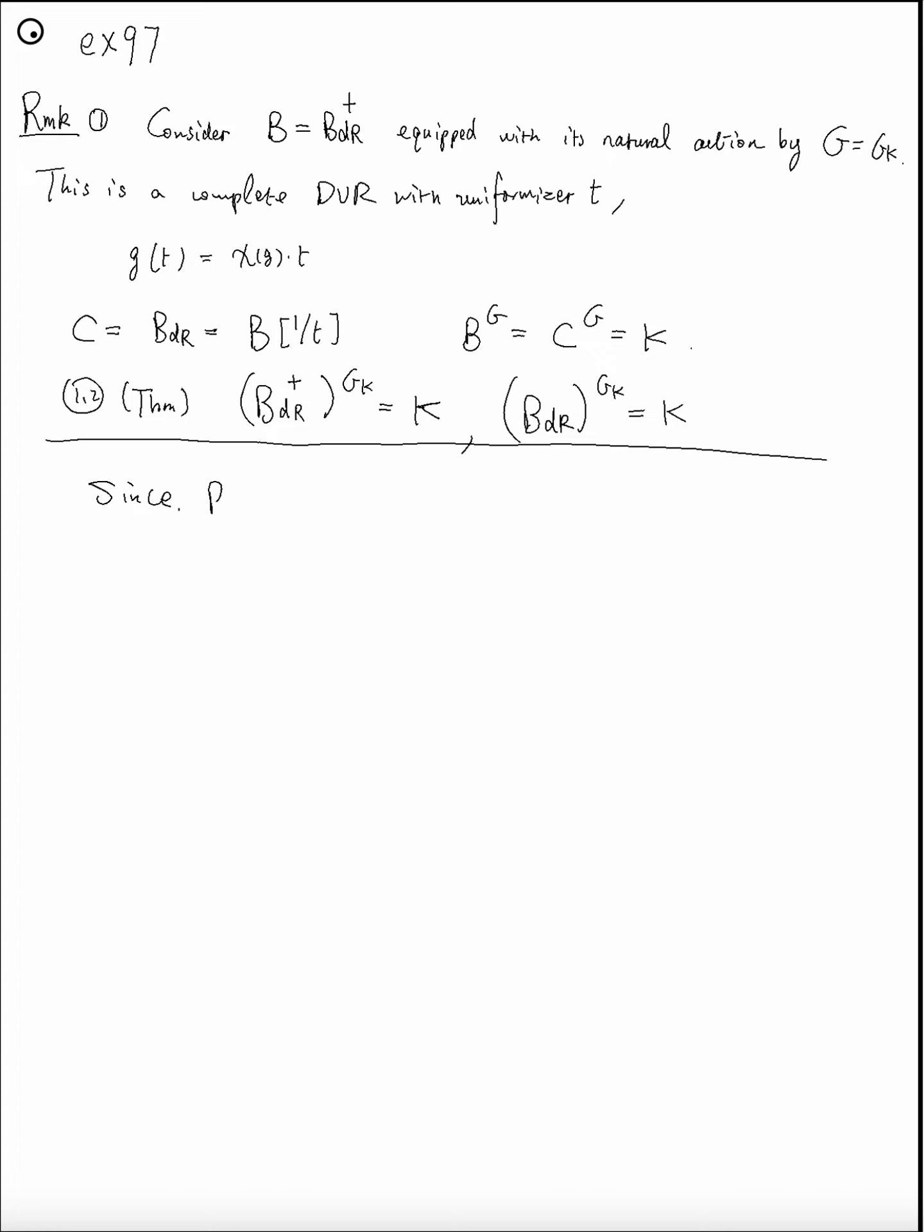Since B_dR is a field, it follows that the second condition is trivial. Hence any non-zero element is a unit. So this is QP J_K-regular.